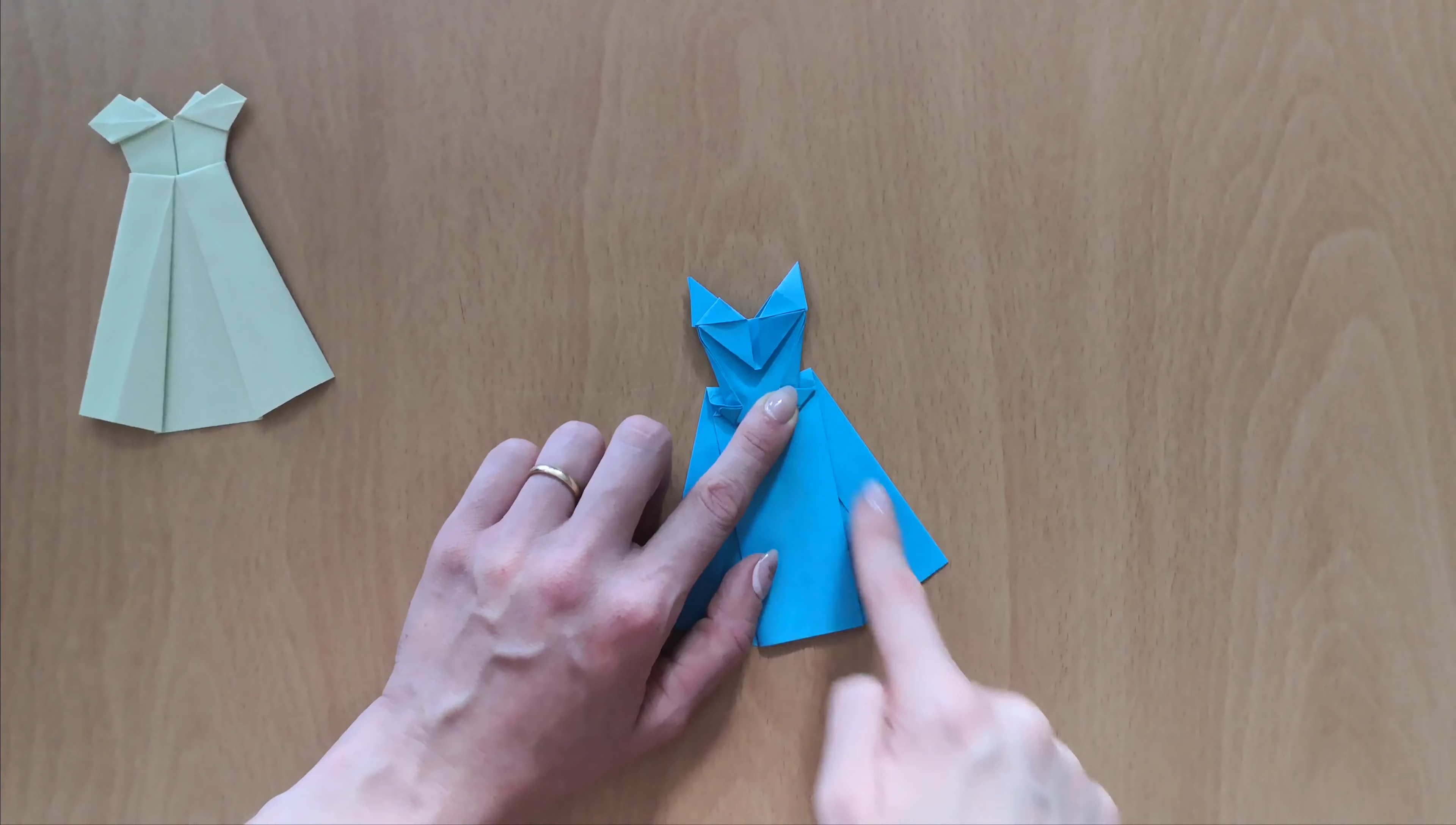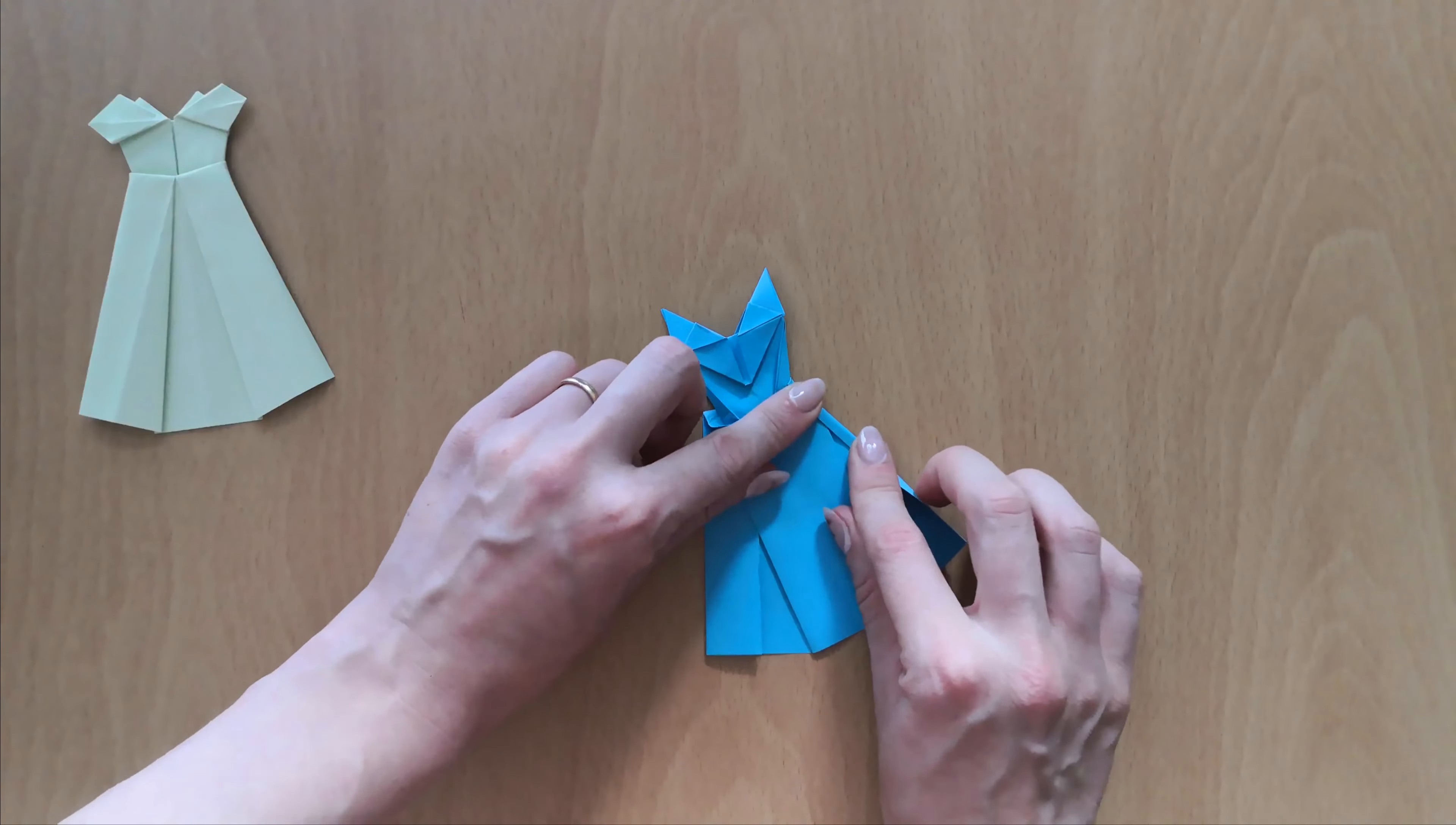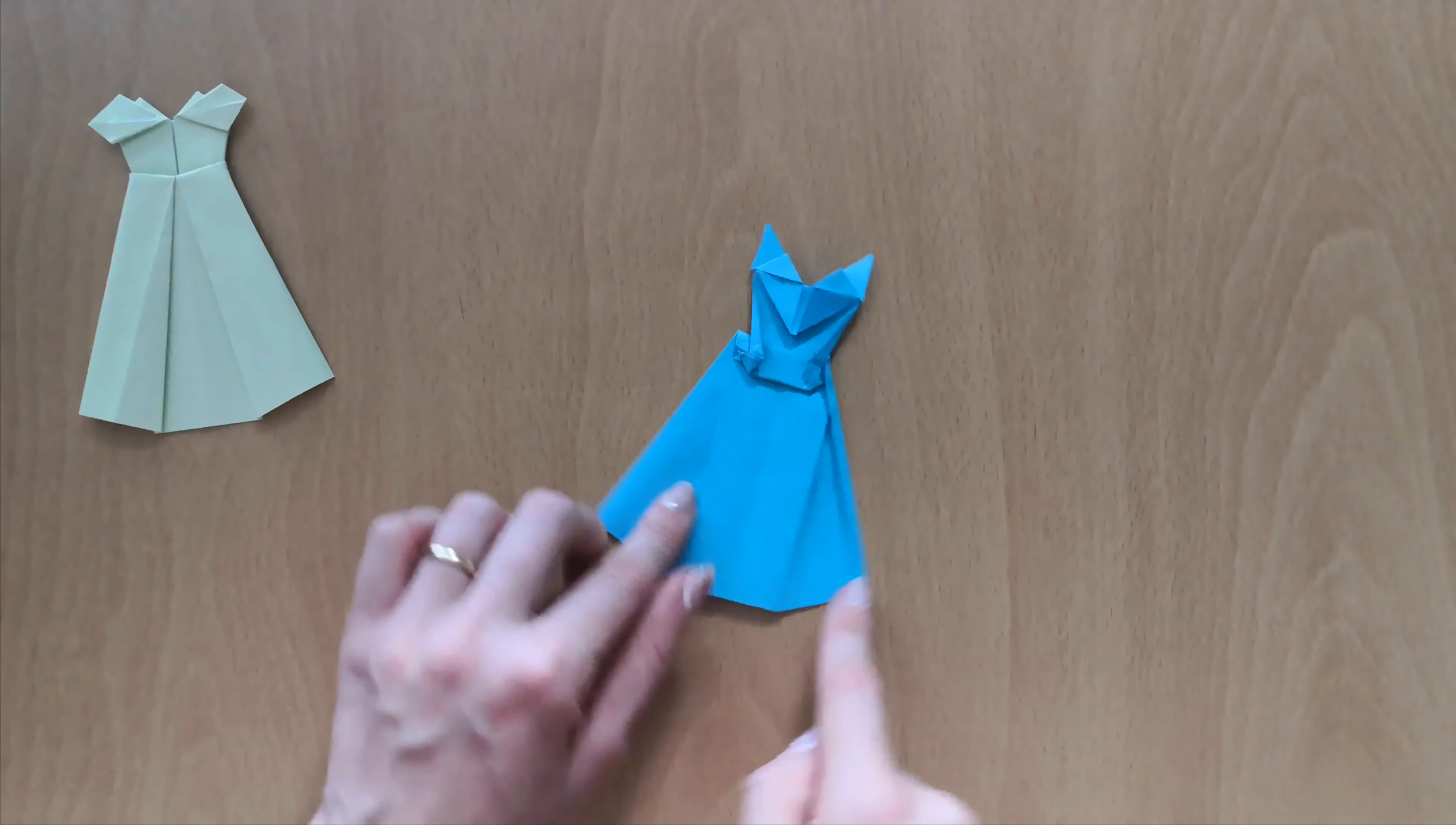Now in the next step, take it from this upper part and fold it in so that it goes to this line. And you see the width of this paper, and make sure that the line stays the same.